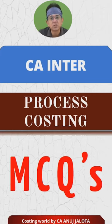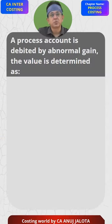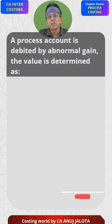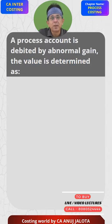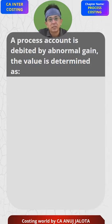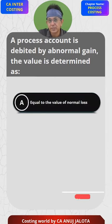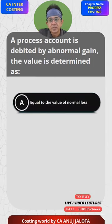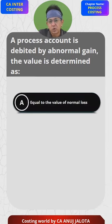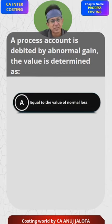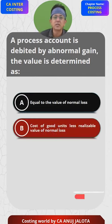We enter process costing MCQs. A process account is debited by abnormal gain, and the value is determined as equal to the value of normal loss. That is not correct — normal loss is valued at scrap value, but abnormal gain is valued at cost, so this cannot be the answer.